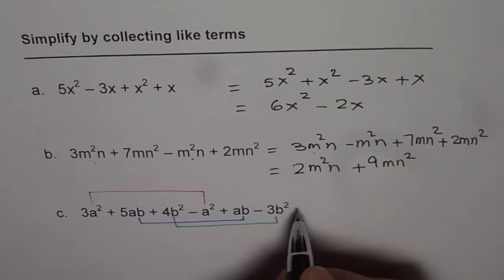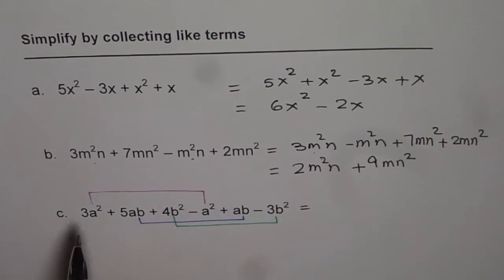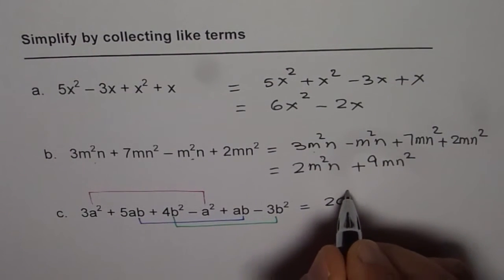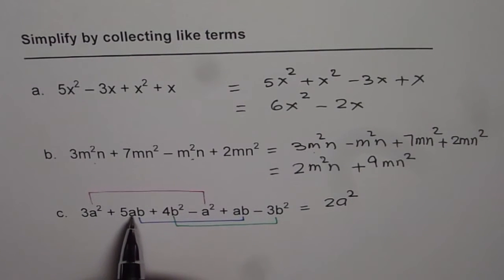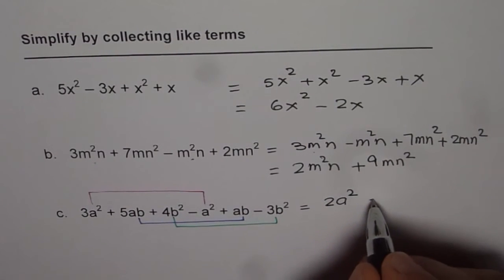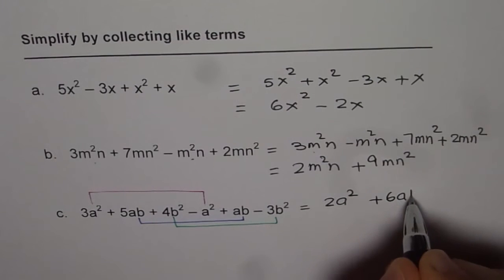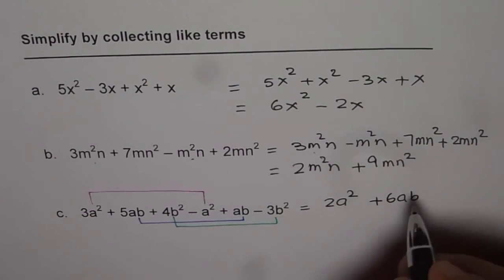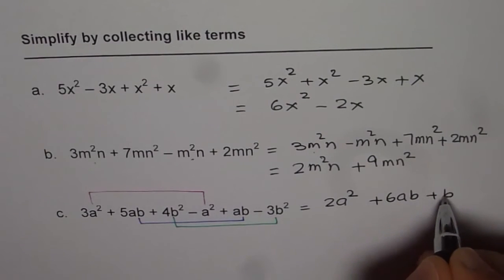Once we combine them, we can write down our answer. So 3a² - a² gives us 2a². 5ab + ab gives us 6ab. And 4b² - 3b² gives us b².